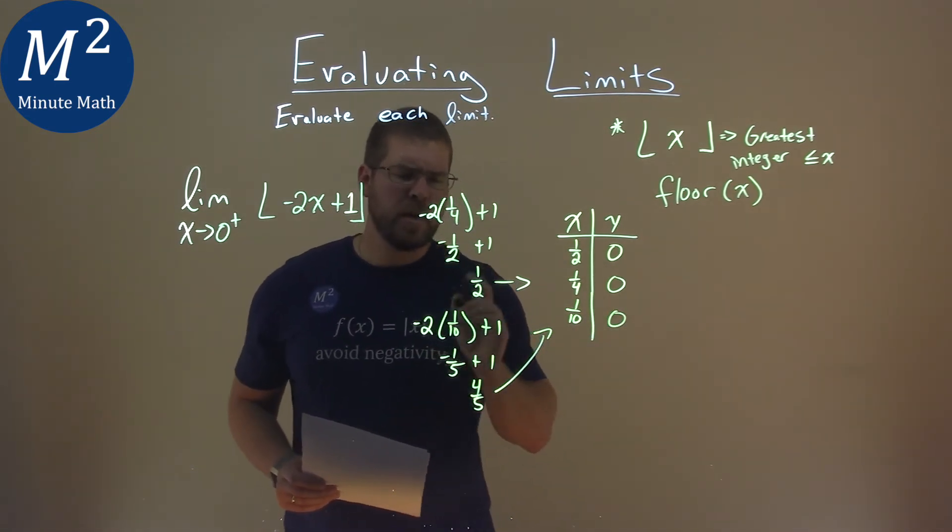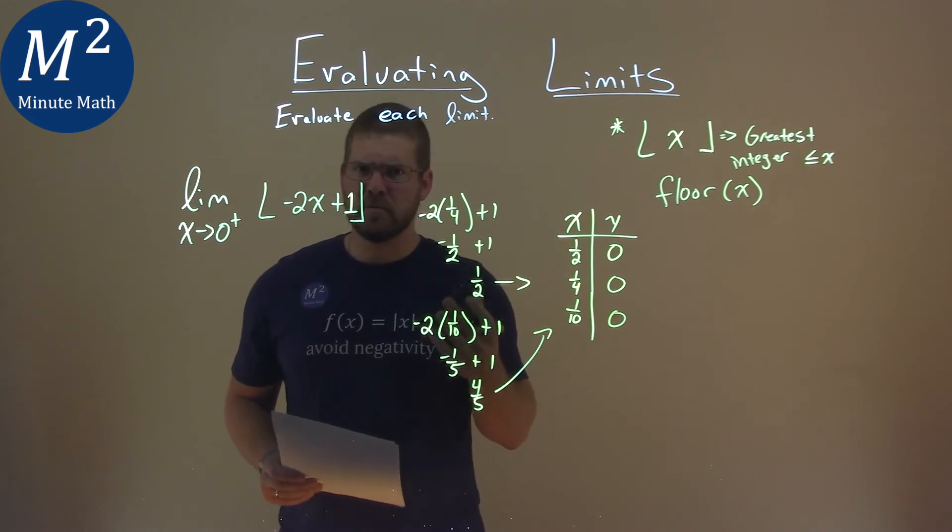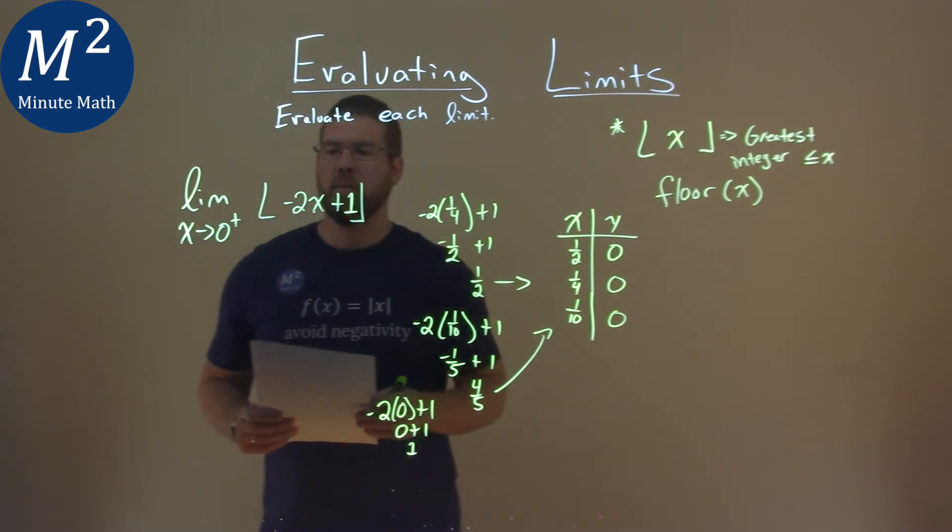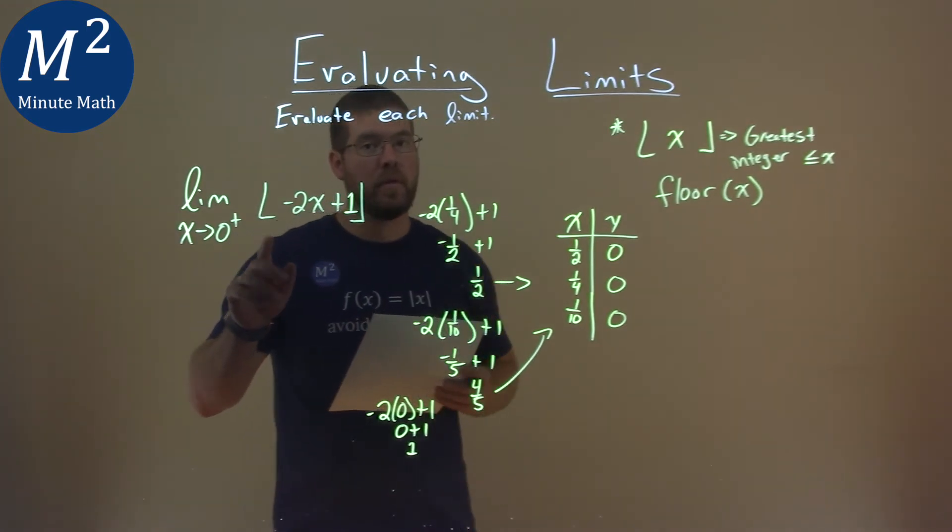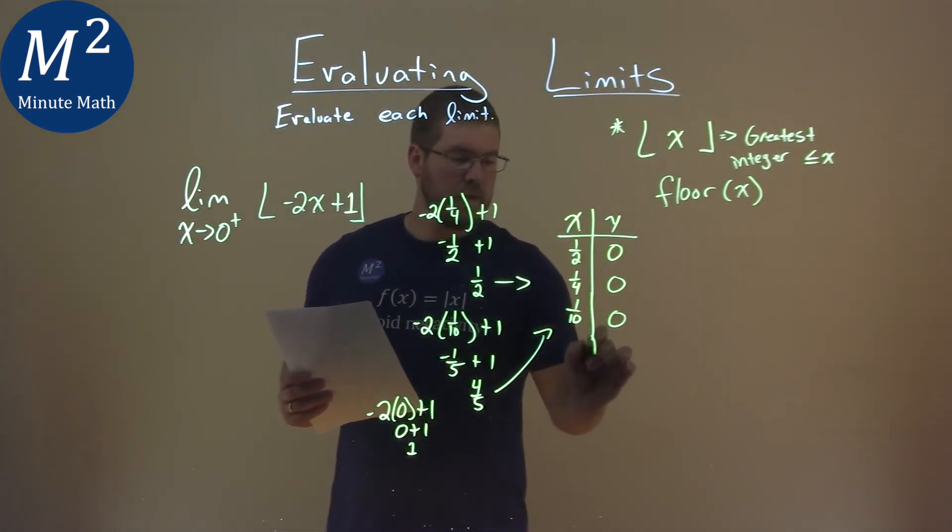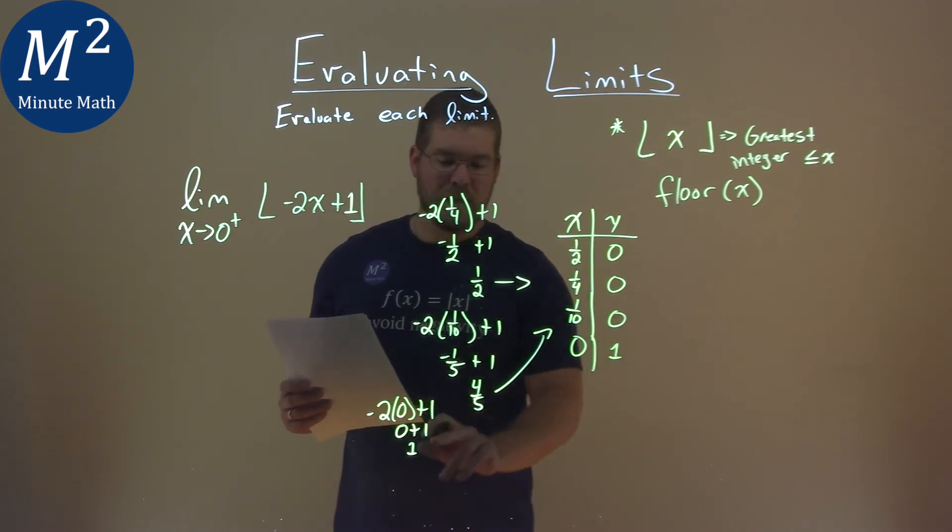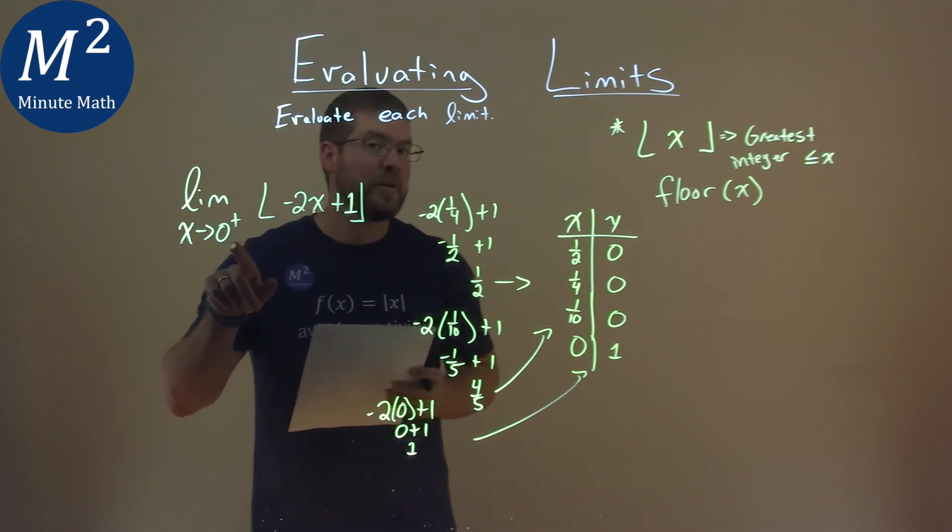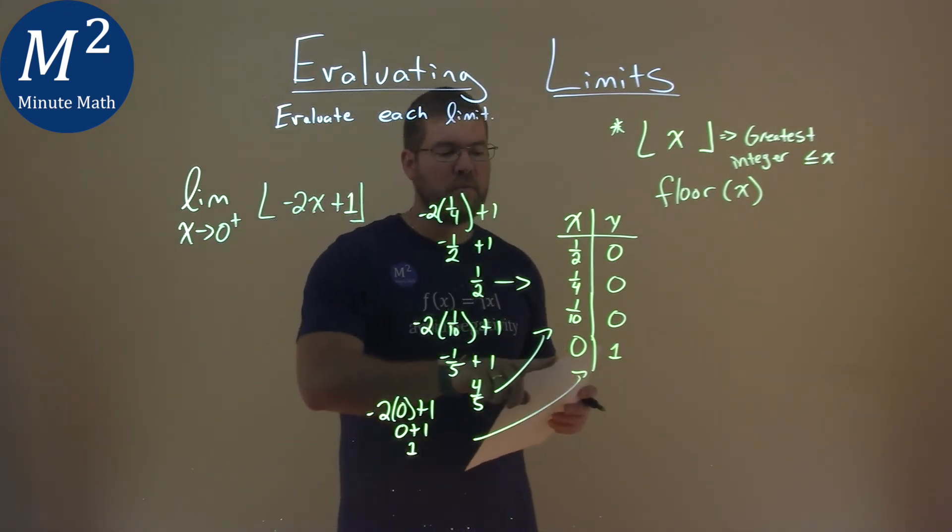Now what happens if we actually plug in zero for x? Negative two times zero plus one, negative two times zero is zero, plus one is one. So this is the key here when we say we approach zero from the right. We're not a one, but that's not going to be our limit here. Again, we're approaching from the right, not actually plugging in, and that's where the jump happens.